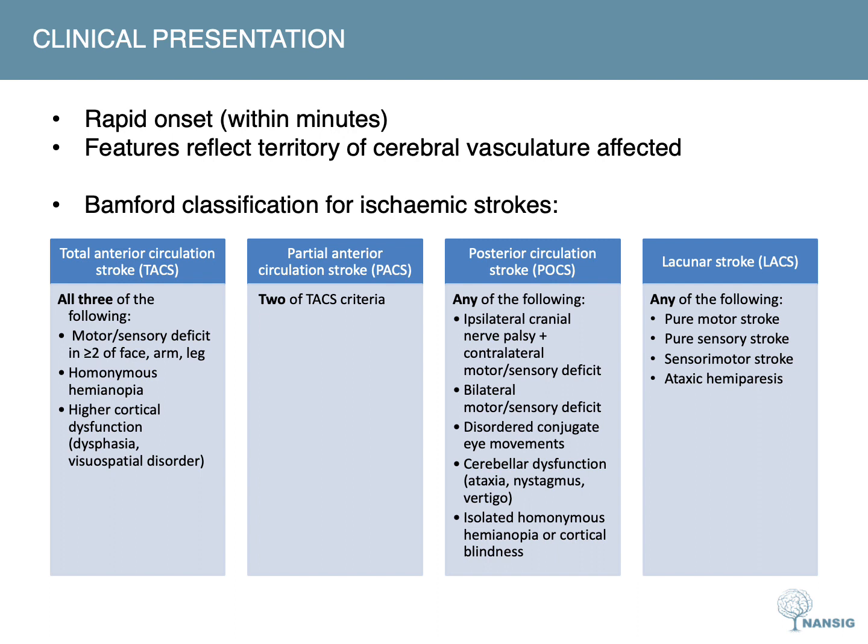The anterior circulation is made up of the internal carotid arteries and its branches, whilst the posterior circulation is made up of the vertebral arteries and its branches. The Bamford classification system can be used to identify the area of brain tissue affected in ischemic strokes. Total anterior circulation strokes involve a large cortical stroke affecting the territories of the anterior and middle cerebral arteries, indicated when all three of the following are present: a motor or sensory deficit in two or more of face, arm and leg; homonymous hemianopia; and higher cortical dysfunction, including dysphasia and visuospatial disorder. Partial anterior circulation strokes are a less severe form where only part of the anterior circulation is compromised, indicated when two of those criteria are present.